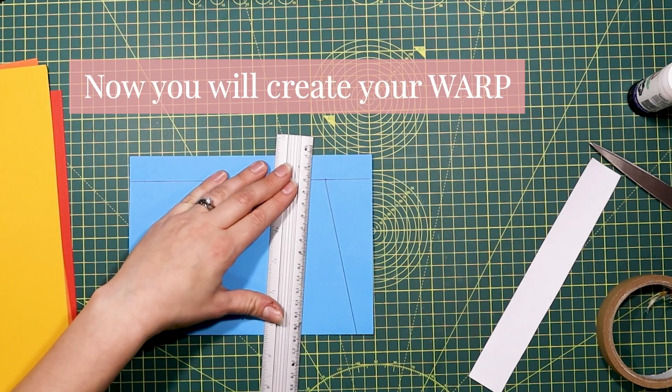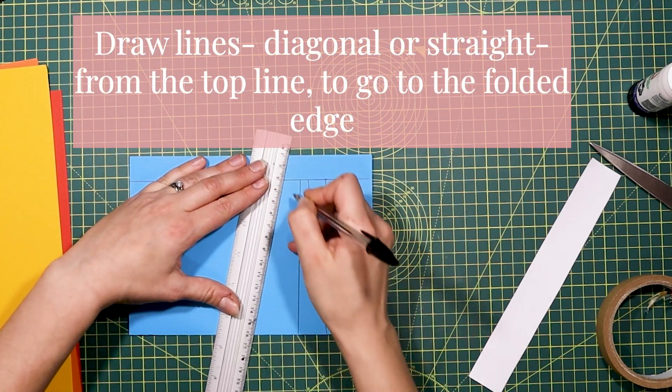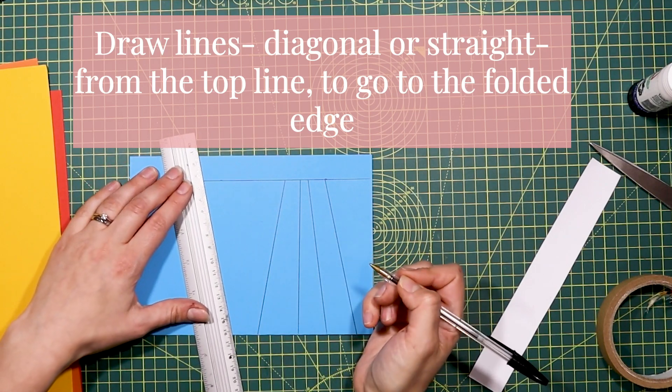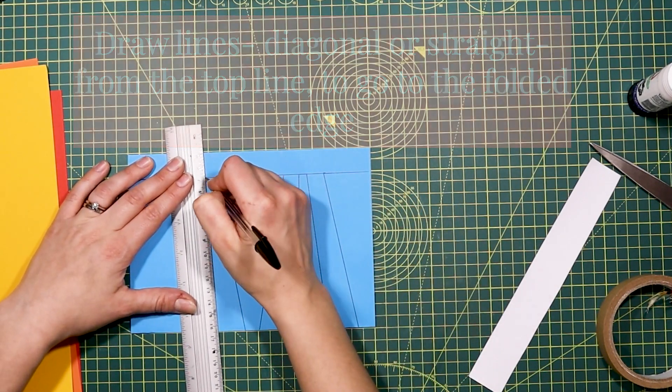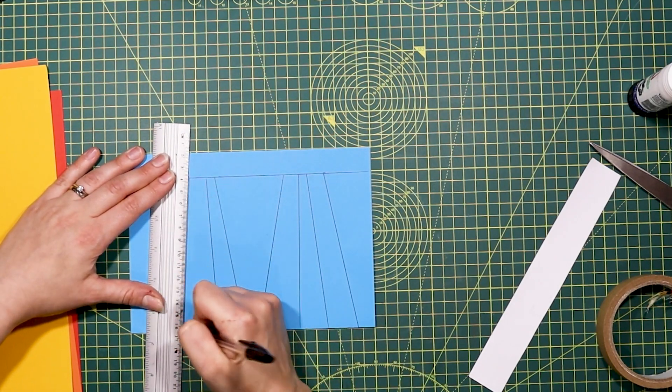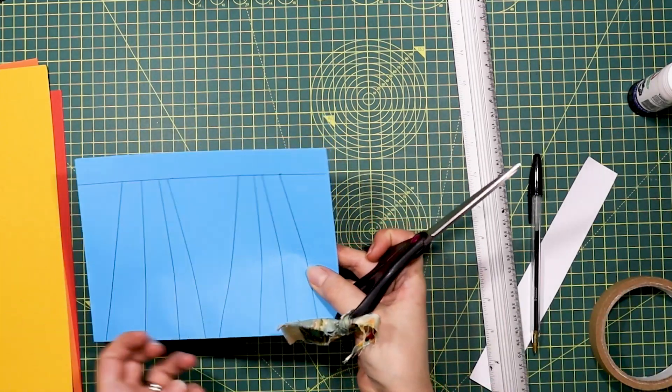Now we're going to create our warp. I've chosen to do diagonal lines in a sort of pyramid shape. You'll notice that my lines don't touch each other but they do touch each side, so as long as they meet the folded edge and the edge where you've put your line, that's absolutely fine.